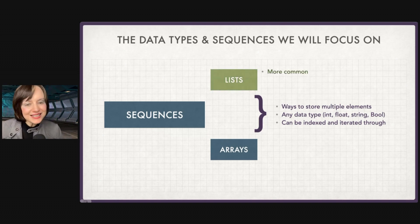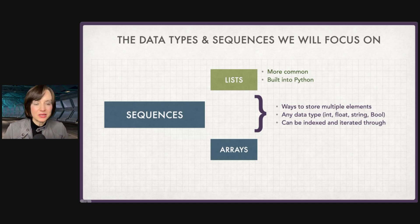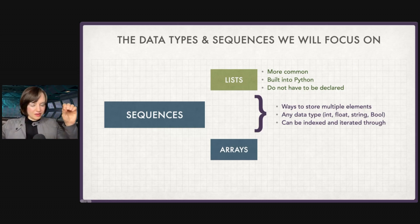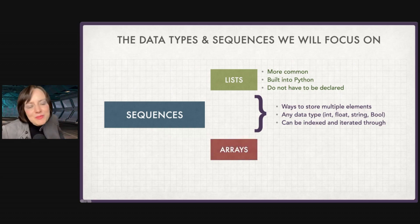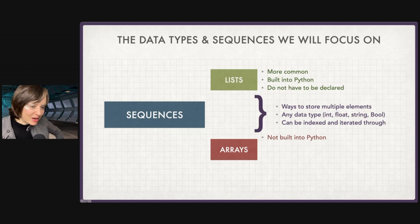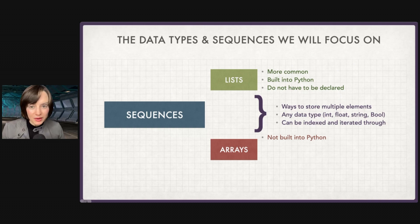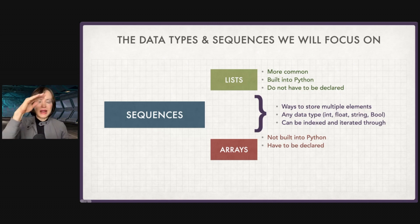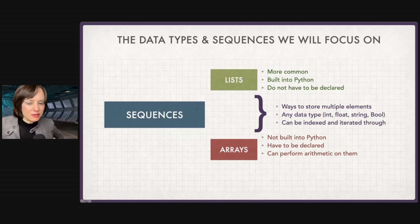Some differences: lists are more common — you're going to see lists out in the world more often. They're built into Python, so you don't need to import a package. They do not have to be declared, meaning you can just write the elements in square brackets and you have a list. Arrays are a little bit more fussy. They're not built into Python — we have to import an array using the NumPy package. They have to be declared — I have to say my_array = ... — it can't just be out there in the world.